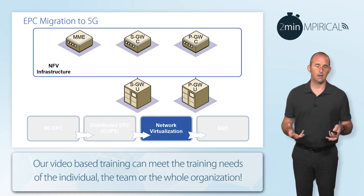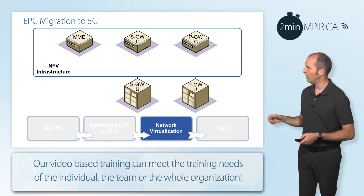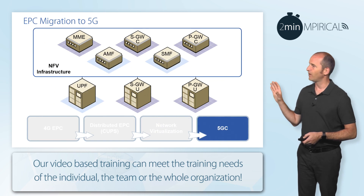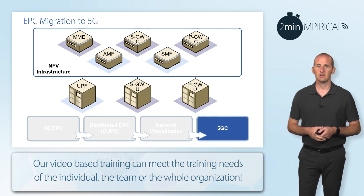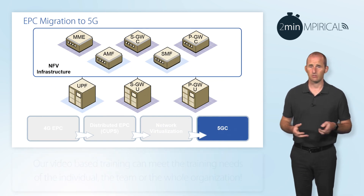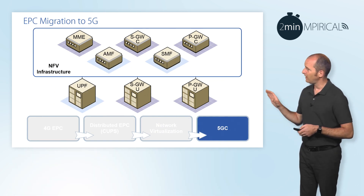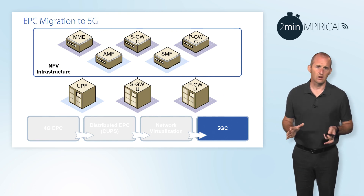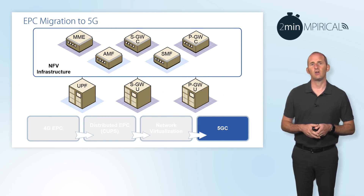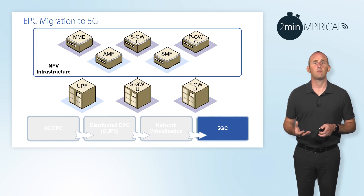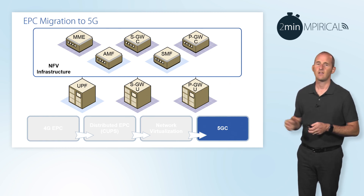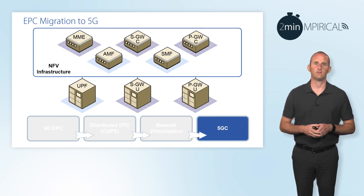Now if they have deployed the NFV infrastructure, the next step with respect to the 5G core is to take those core network elements — like the access and mobility management function, the session management function, and various other 5G core network elements — and deploy them as virtualised network functions on the existing NFV infrastructure.